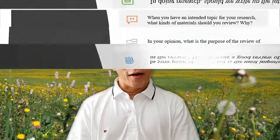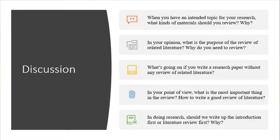Can you have a look at the question for discussion? Question number one: when you have an intended topic for your research, what kinds of materials should you review and why? So far, you think about the topics for your research already — that's from the previous section where we conducted the introductions.